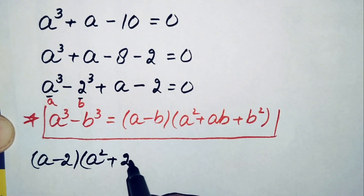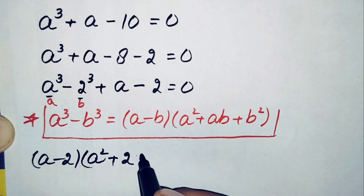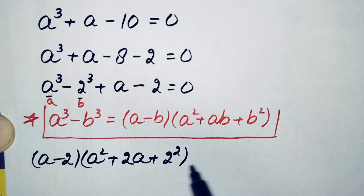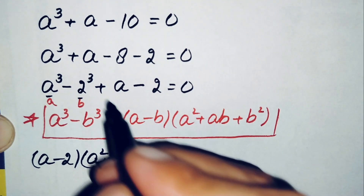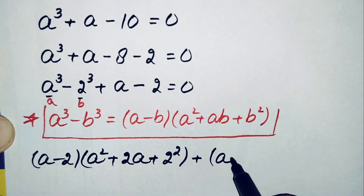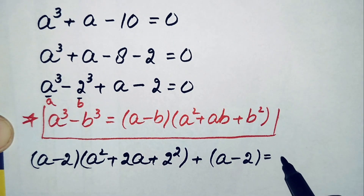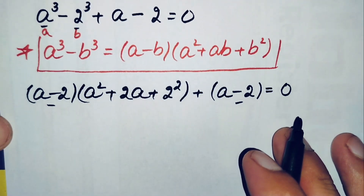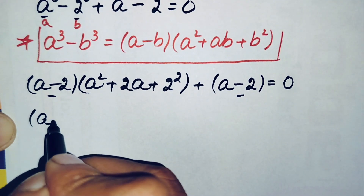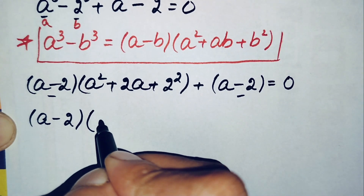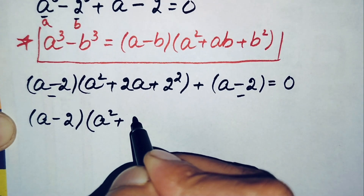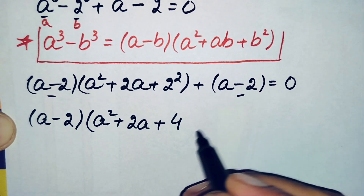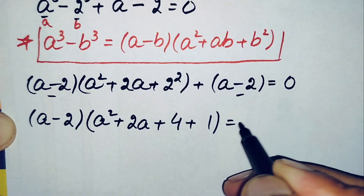So a square plus a times b, where b is 2, giving 2a, plus b square where b is 2 giving 2 square, and then close them in parenthesis. So this will become a minus 2 is equal to 0. Now here we will take a minus 2 common from these two terms. So taking a minus 2 common, this will become a square plus 2a plus 4 and here only 1 is left, is equal to 0.